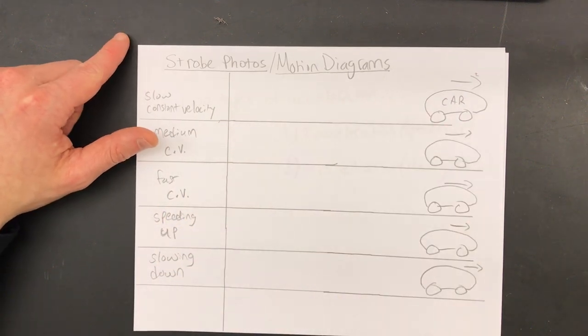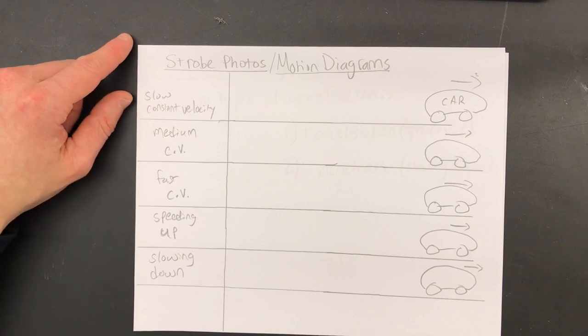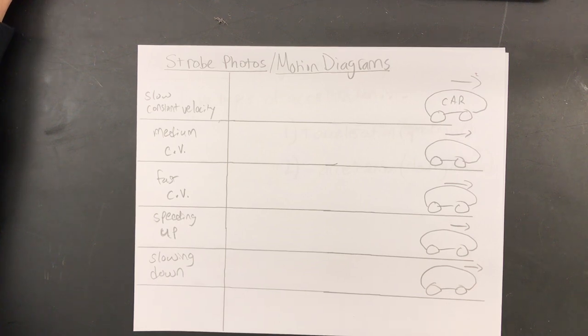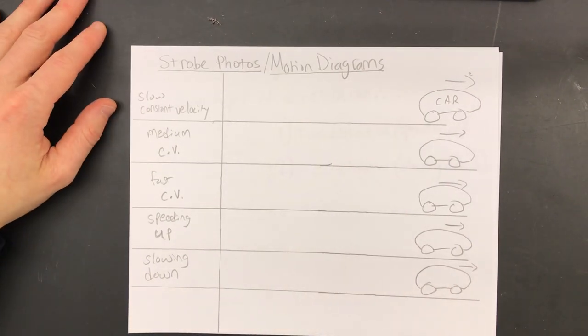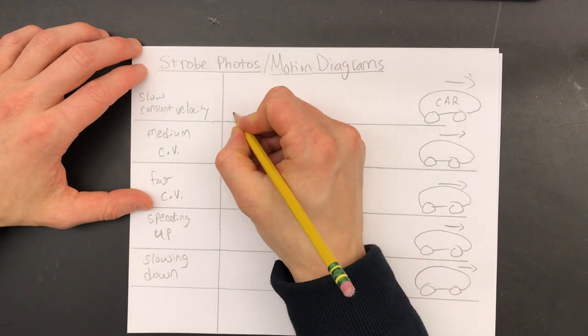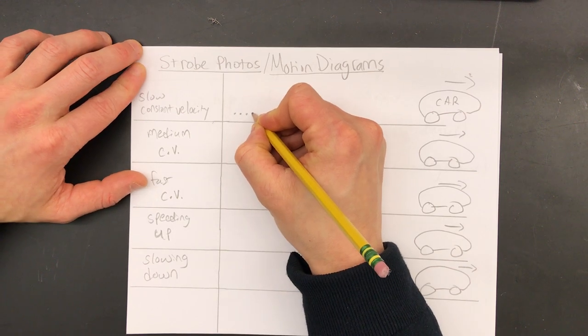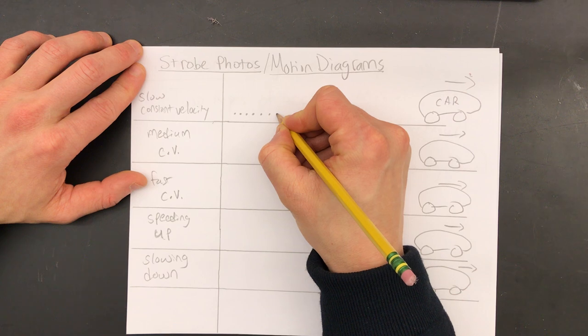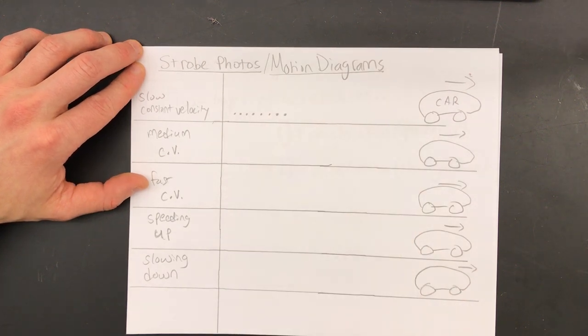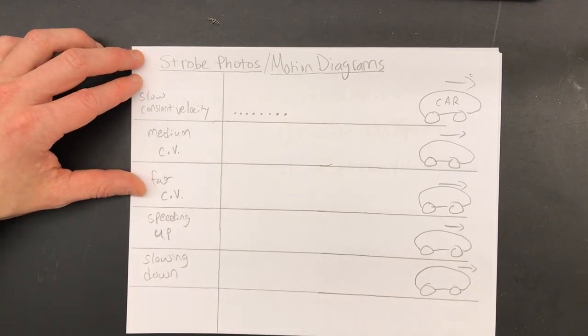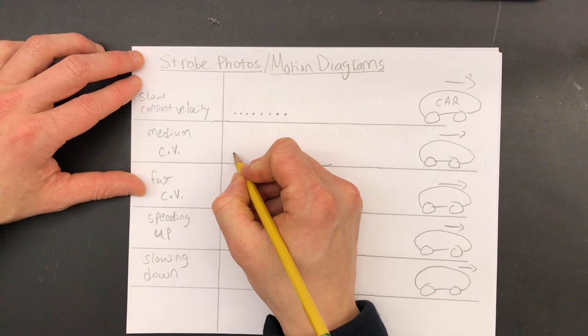But I don't really want to draw a car every time. Just like that strobe photo had a picture of a basketball every time, I don't really want to draw that because it just takes a long time. So I'm going to draw dots instead of cars. So what would slow constant velocity look like? Well, slow means that the dots are close together like this. But you're going to see that I'm also trying to make those dots equally spaced because they are moving at a constant speed, which means the space between each dot is the same.